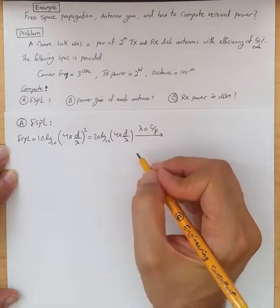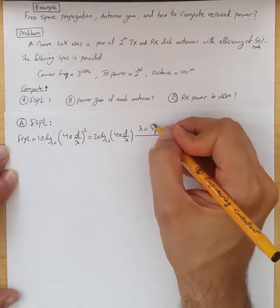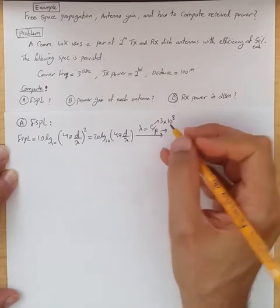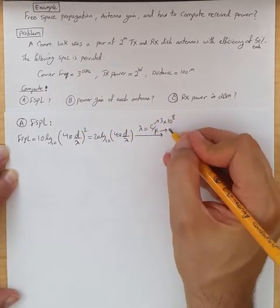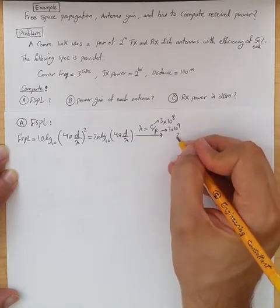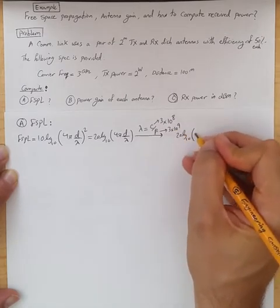f is the carrier frequency, c is speed of light. This is 3 times 10 to the 8. This is given 3 gigahertz, so it's 3 times 10 to the 9. So from there, we get 20 log 10, 4π.